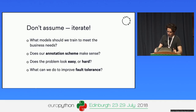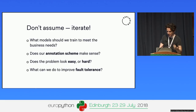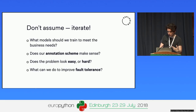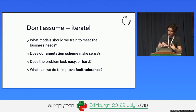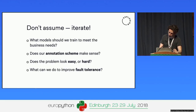We're asking: what model should we train to meet the business needs? Does the annotation scheme make sense? Does the problem look easy or hard? As soon as we start doing it, we can start getting evidence. We can also figure out what we can do to improve fault tolerance when we see what sort of mistakes the model might make and how serious those are.